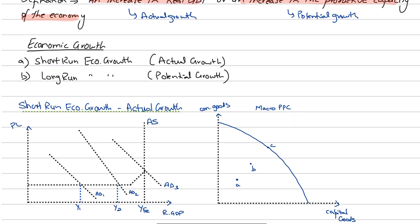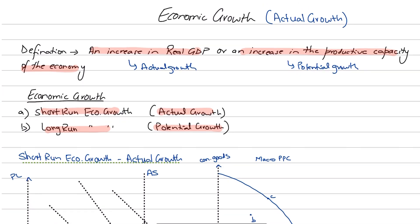Economic growth is of two types. One is short-run economic growth, also called actual growth, and then long-run economic growth, known as potential growth, where the economy's productive potential is actually rising. When measuring economic growth, we are actually measuring the rate at which our real GDP is going up, and that's what national income statistics is all about — they measure the rate at which economic growth takes place.